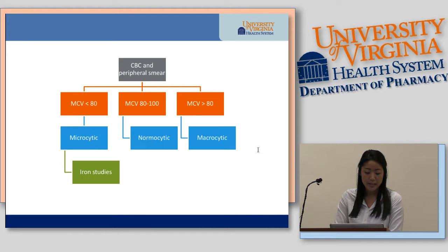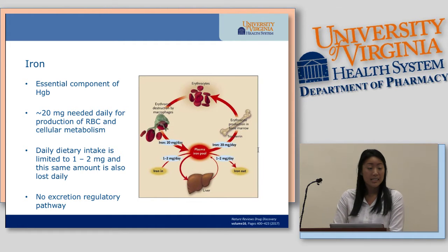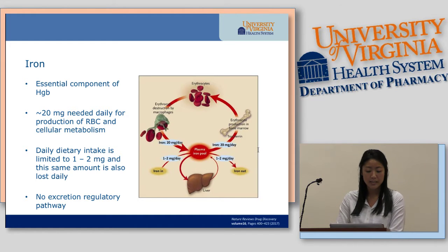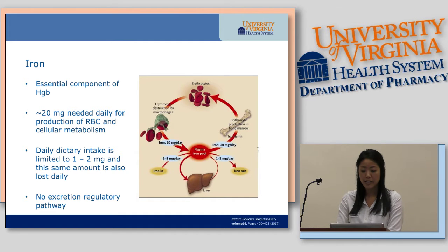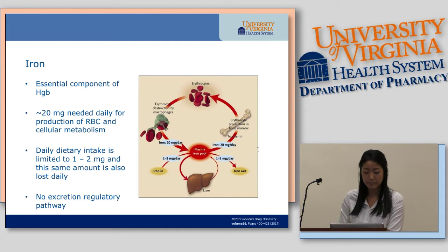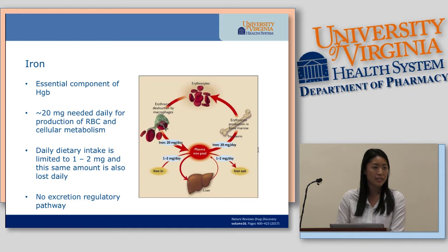Focusing on microcytic anemia — once you've defined this, you can further proceed to iron studies. Iron is an essential component of hemoglobin. About 20 milligrams are needed daily for production of red blood cells and cellular metabolism. The only step that is physiologically regulated in terms of iron balance is iron absorption. The daily dietary intake is about 1 to 2 milligrams, and the same amount is lost daily. Since there isn't really a regulatory step controlling how much iron is excreted, we need other sources for iron homeostasis — recycling of old erythrocytes, iron exchange, and iron stores.